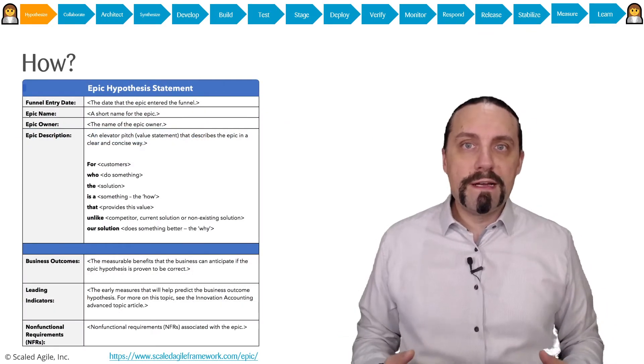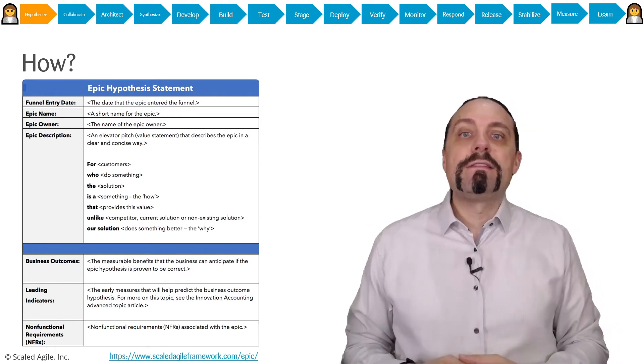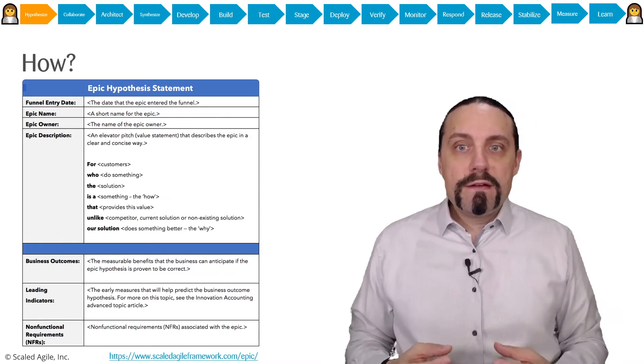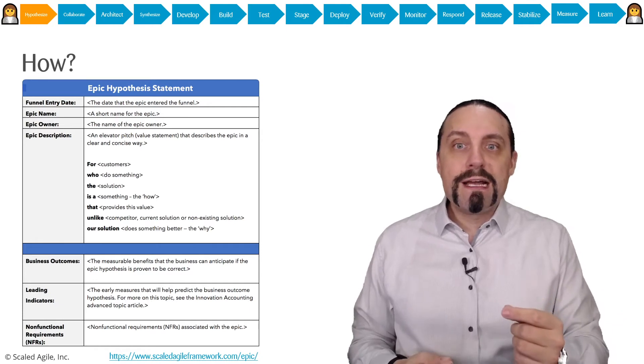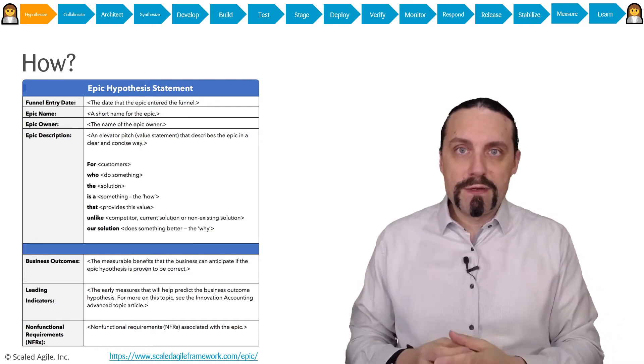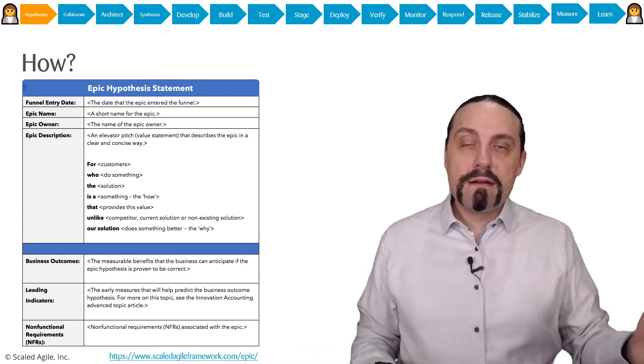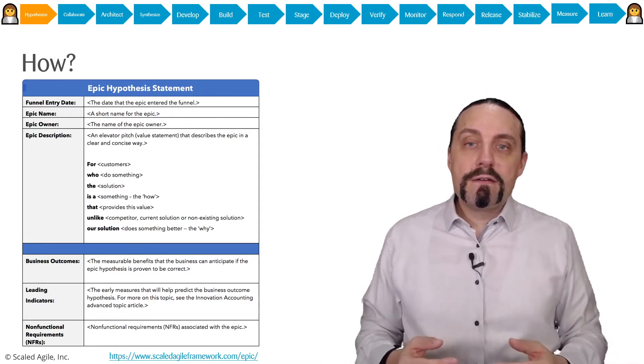So how do we define an epic? We define an epic by using this epic hypothesis statement. There we are going to describe the epic. We are going to describe for what kind of customer are we doing that. And remember there are of course internal customers and there are external customers in a company.